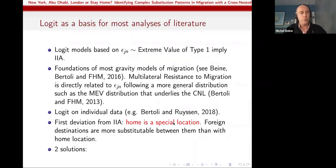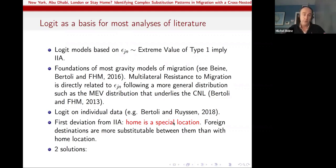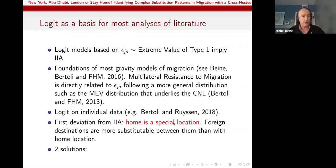I am presenting results on individual data, but this has important implications for gravity models using aggregate data. For instance, regarding the multilateral resistance to migration: if you look at the paper of Simone and Resus in the JDE in 2013, there is a connection between the choice of the underlying distribution of the stochastic component and the presence of multilateral resistance to migration. The multivariate extreme value distribution underlying the CNL results in gravity models having multilateral resistance to migration terms that you need to account for in estimation.